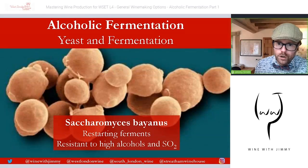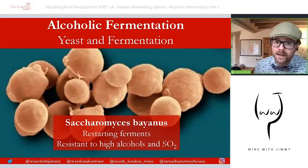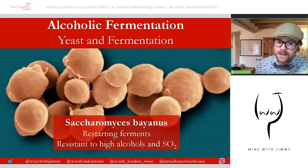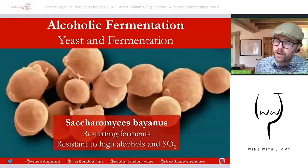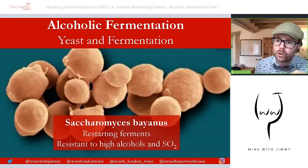Another species worth mentioning is Saccharomyces bayanus, which is used for musts with high potential alcohol and for re-fermenting sparkling wine. It's particularly well suited for restarting fermentation and difficult fermentations, being very resistant to alcohol and sulfur dioxide. Studies have shown that bayanus can affect the sensory profile of wine, creating higher levels of cooked orange peel, yeasty, nutty, or aldehyde characteristics compared to the typical fruity esters that cerevisiae tends to produce.